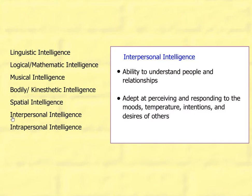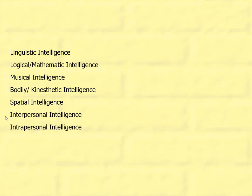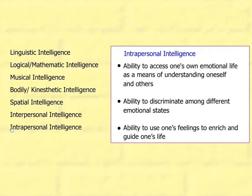Interpersonal intelligence is the ability to understand people and relationships — to be adept at perceiving and responding to the moods, temperature, intentions, and desires of others. Intrapersonal intelligence is the ability to access one's own emotional life as a means of understanding oneself and others, to discriminate among different emotional states, and to use one's feelings to enrich and guide one's life.